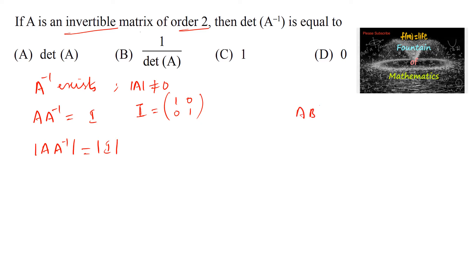And we know that determinant of AB is equal to det A into det B, so we can write determinant of A into determinant of A inverse, which is equal to determinant of an identity matrix is 1.